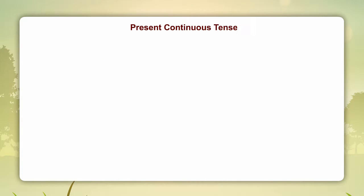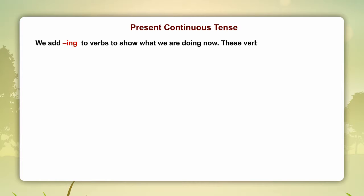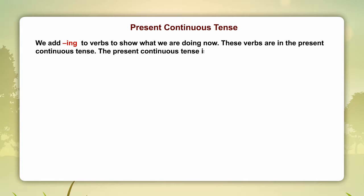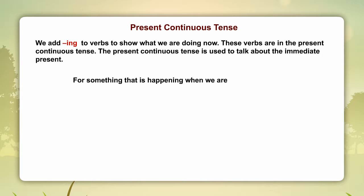Present continuous tense. We add -ing to verbs to show what we are doing now. These verbs are in the present continuous tense. The present continuous tense is used to talk about the immediate present — for something that is happening when we are talking about it.